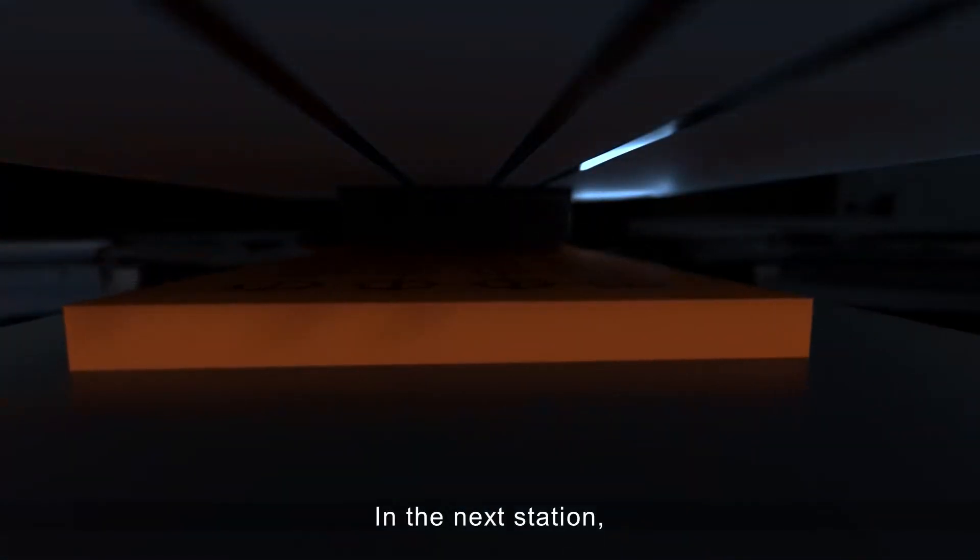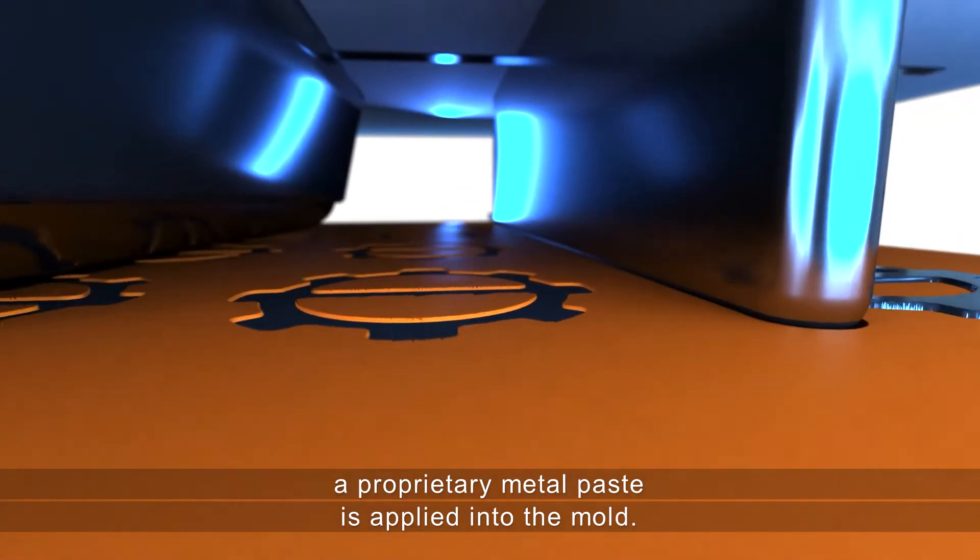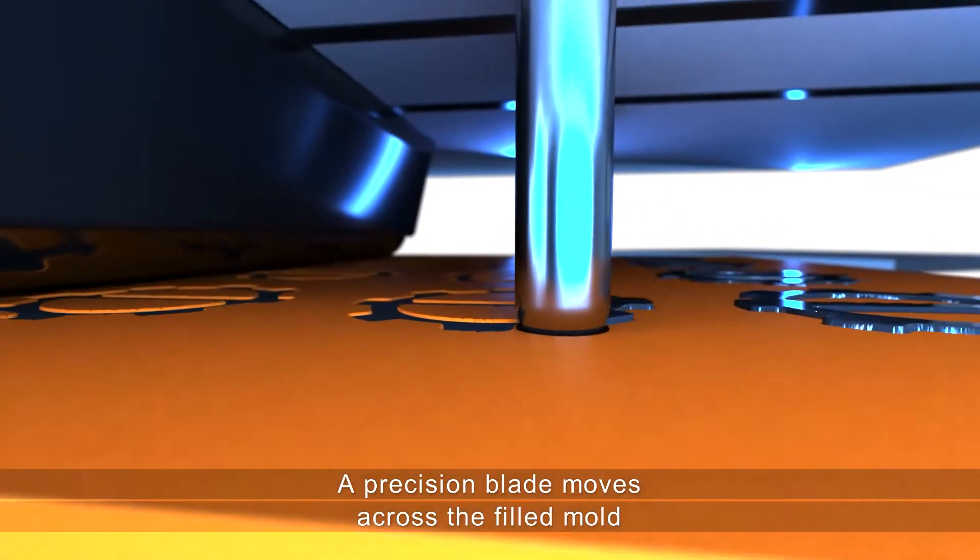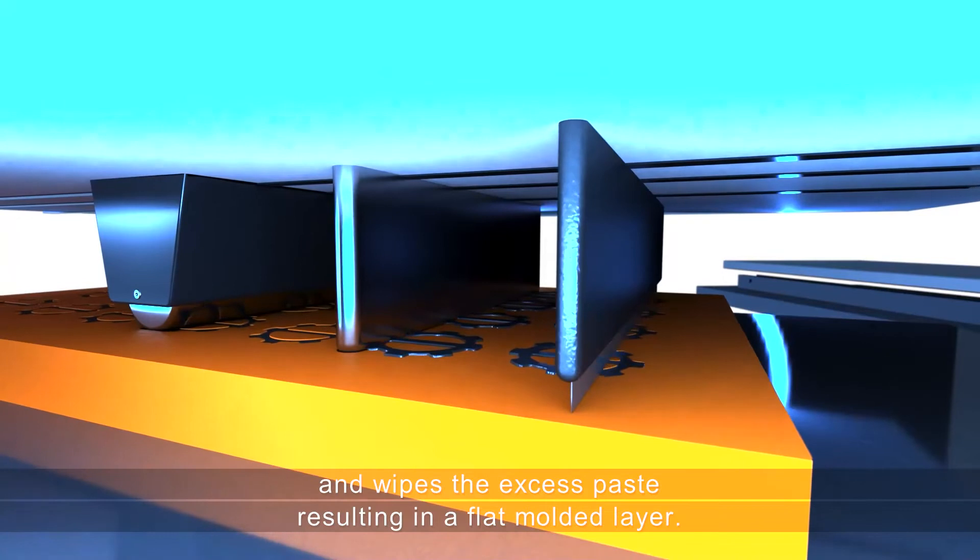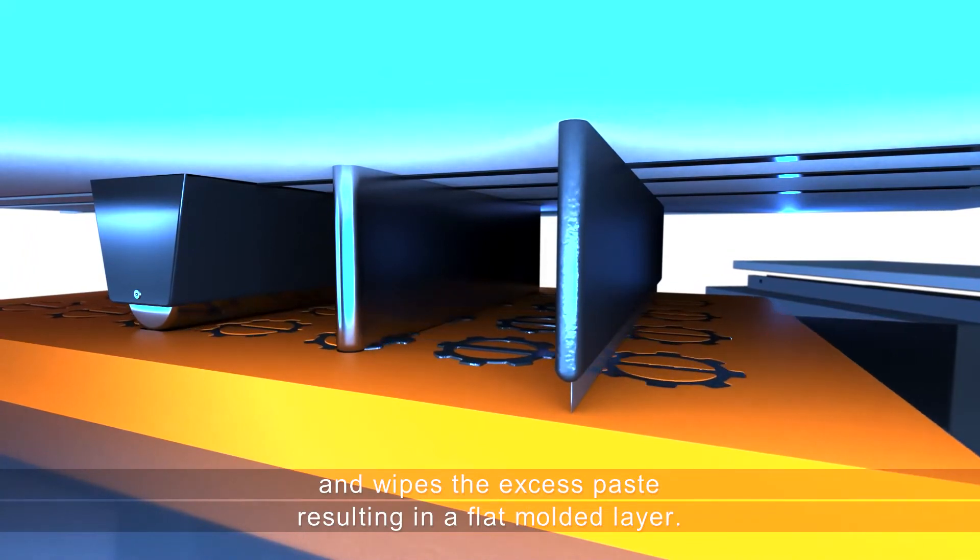In the next station, a proprietary metal paste is applied into the mold. A precision blade moves across the filled mold and wipes the excess paste, resulting in a flat molded layer.